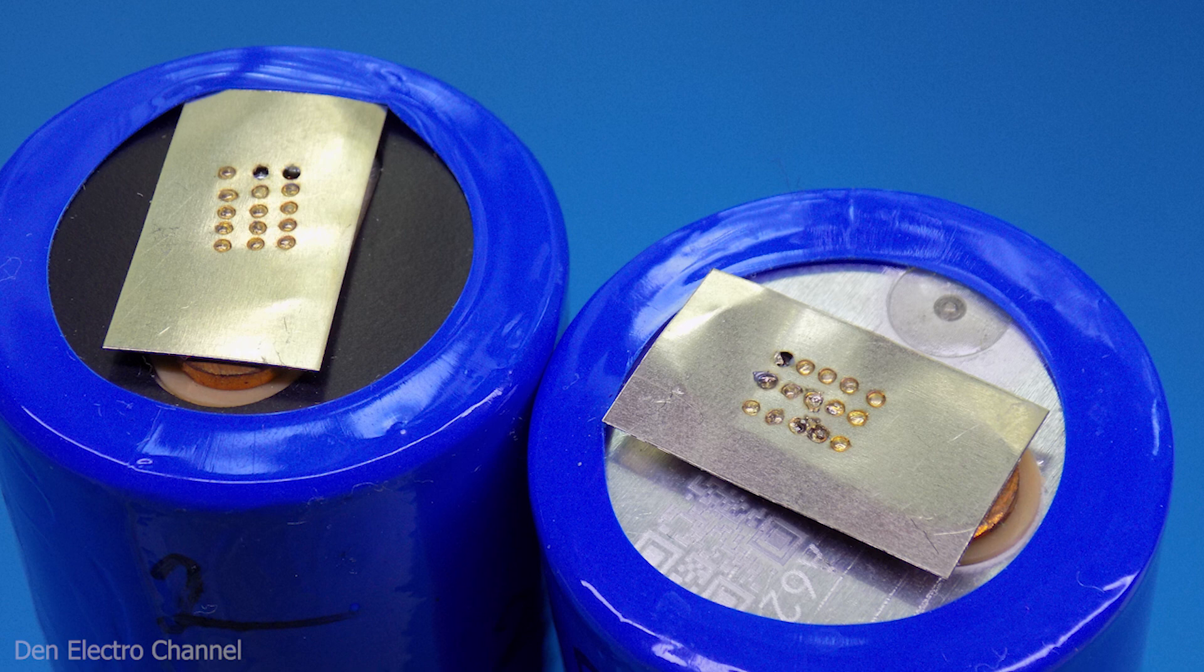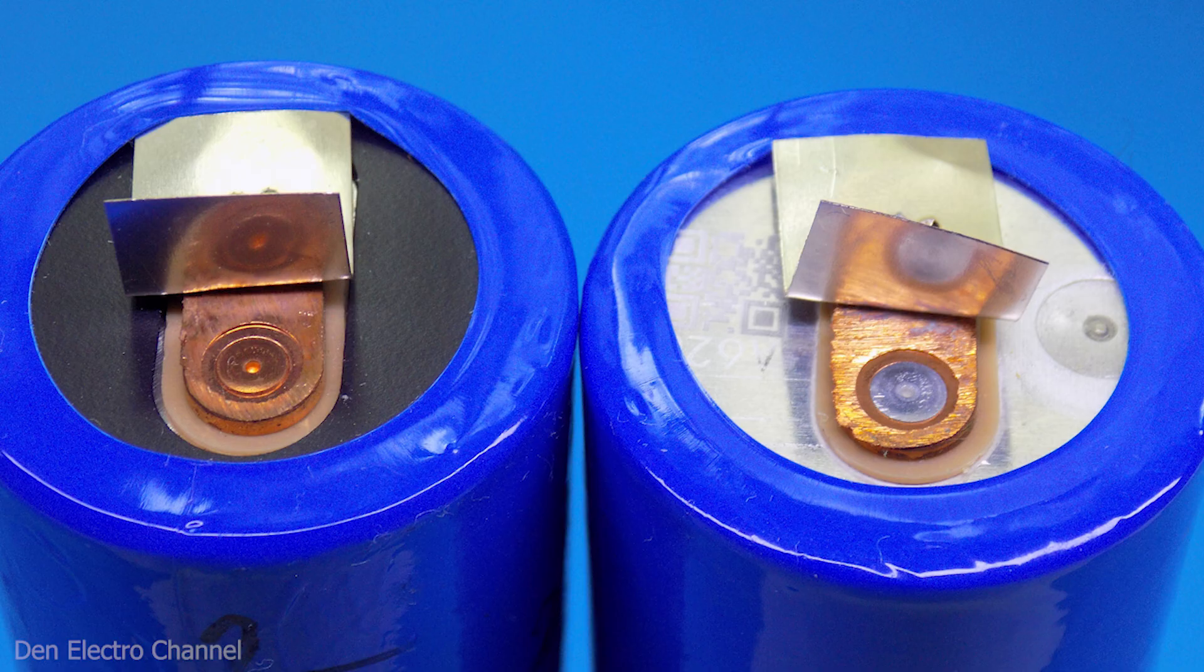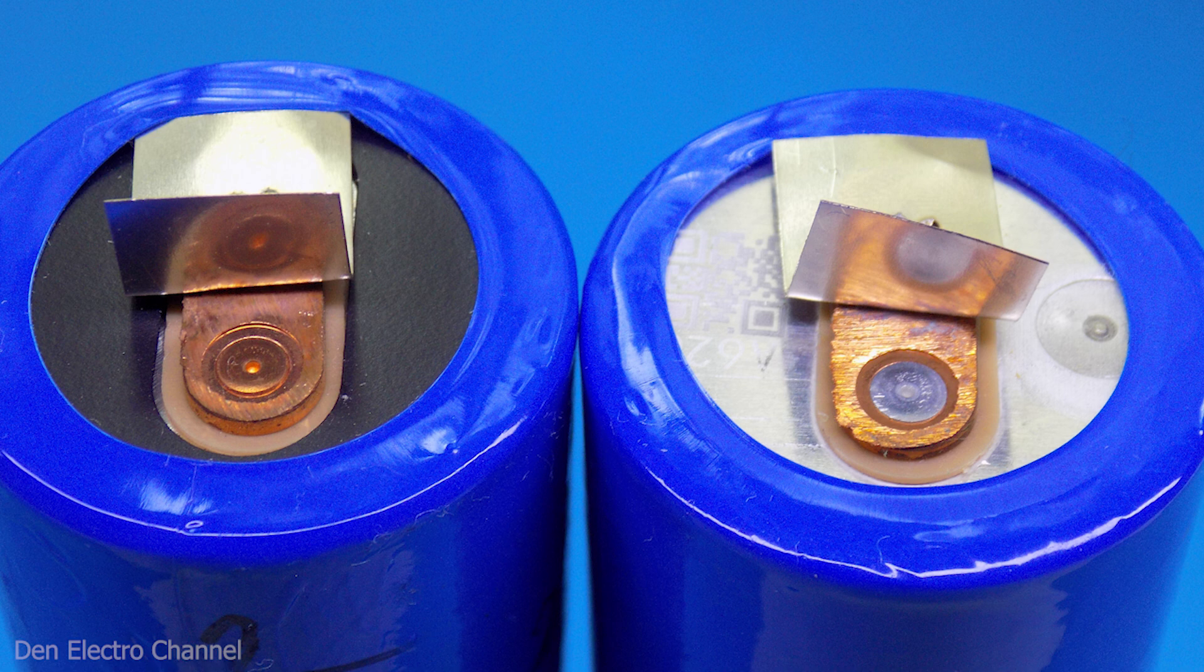The plus and minus on the batteries are not labeled, but they are marked in different colors. Therefore, it is very difficult to make a mistake when assembling the battery. The terminals on each pole of the battery are copper, but they have a nickel plate welded to them, which is what I welded my plates to.